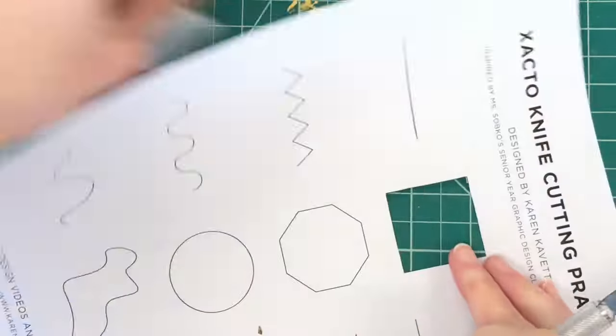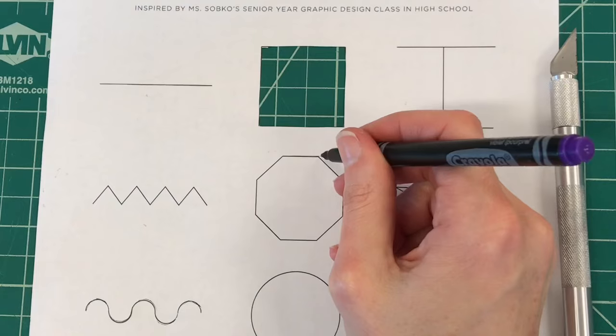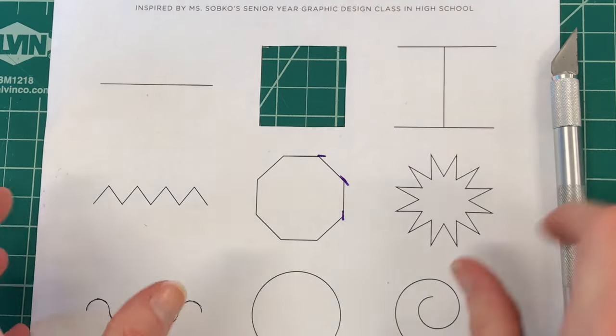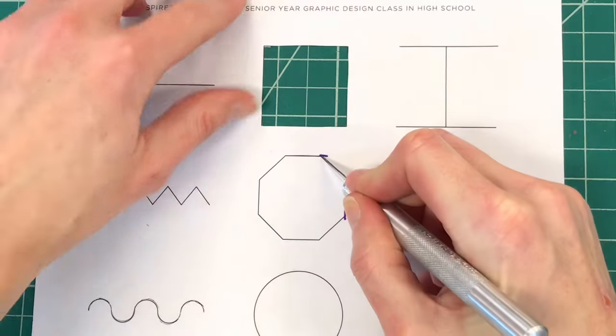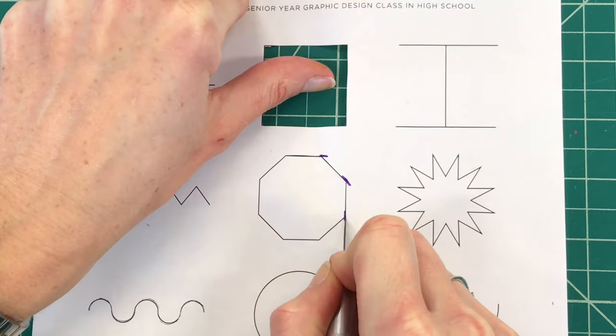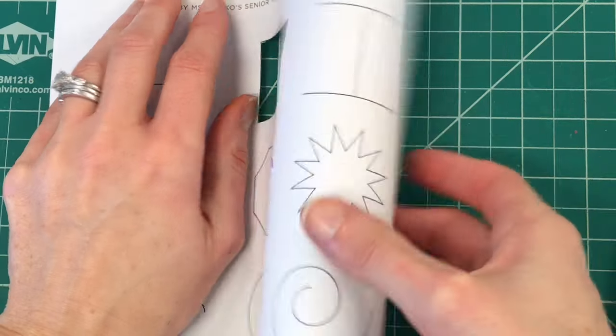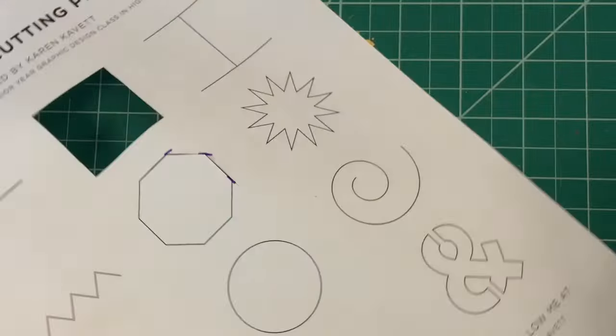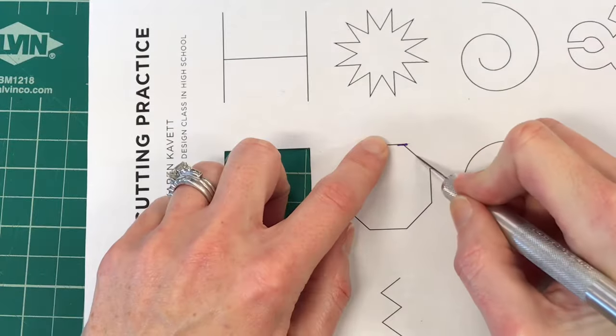Next I want to show you a tip called over-cutting. When you're trying to remove a shape, it's best if you cut the line a little bit longer than what is actually necessary. This is so that it's easier to remove the piece of paper and not have a little tail hanging. Sometimes when a little piece is hanging then you have to pull it to remove it and you could get a tear.